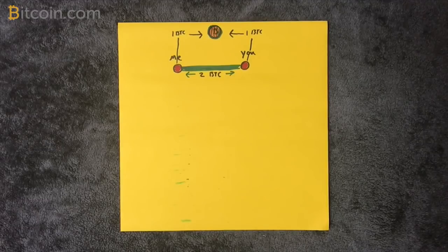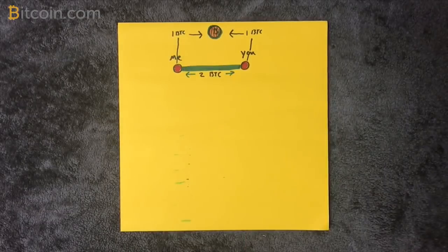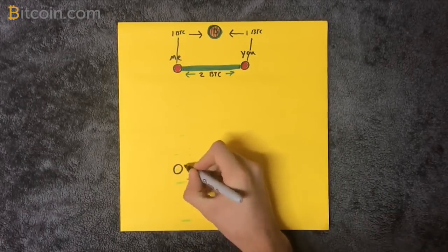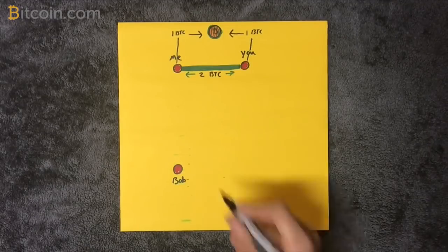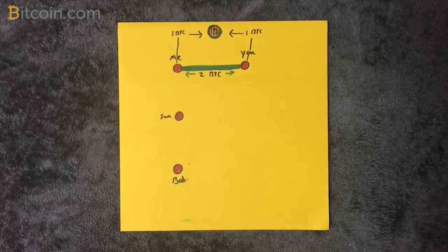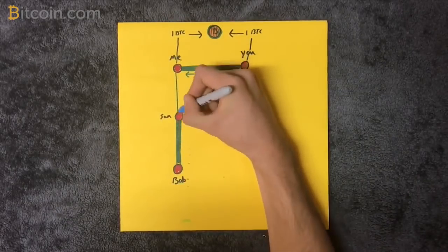Let's say you want to transact with Bob and pay him one bitcoin. Bob does not currently have an open channel with you and you don't want to have to pay the fees to open another channel. It turns out that my first cousin Sam has an open channel with Bob.